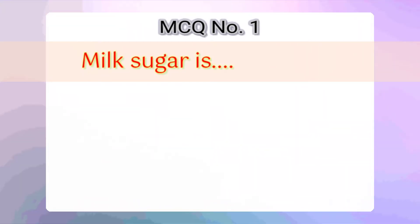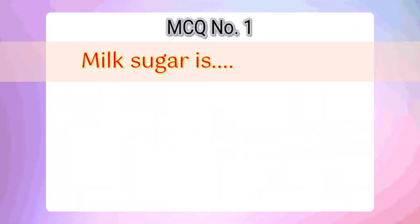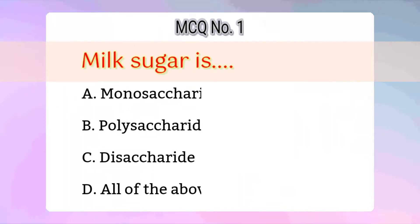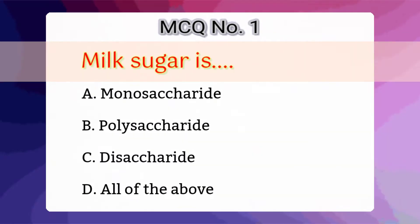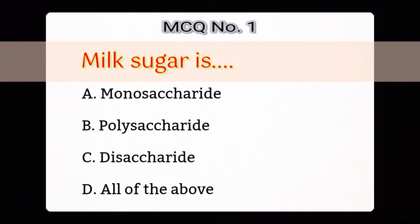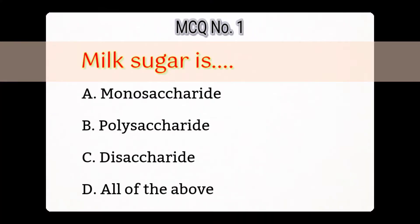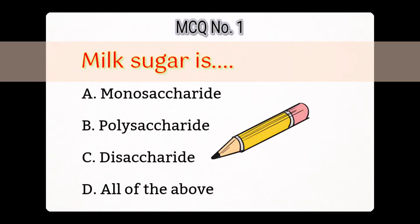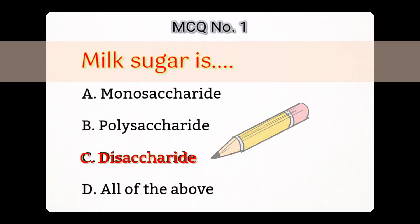First question: Milk Sugar is — Option A: Monosaccharide, B: Polysaccharide, C: Disaccharide, D: All of the above. Answer is C: Disaccharide.